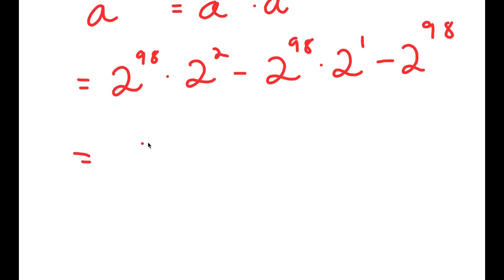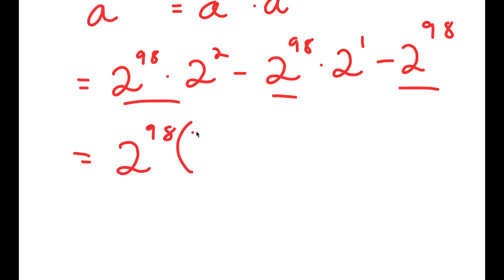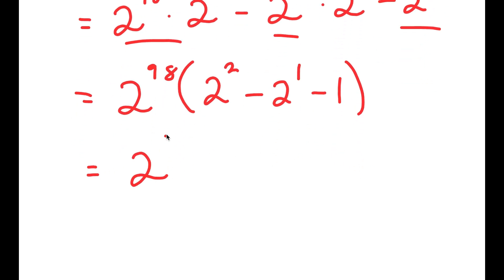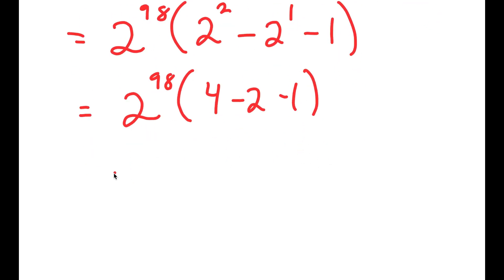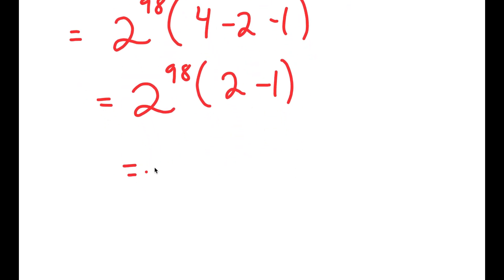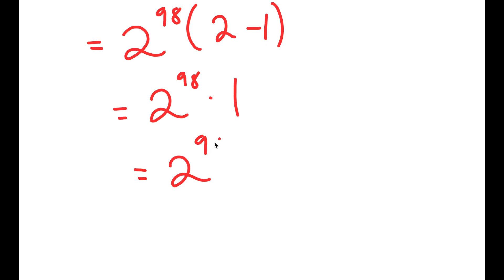From here I can factor out 2 to the power of 98, because it's in all of my terms. So if I factor out 2 to the power of 98, I get 2 to the power of 98 times the quantity 2 squared minus 2 to the power of 1 minus 1. This equals 2 to the power of 98 times (4 minus 2 minus 1), which equals 2 to the power of 98 times 1, which is just 2 to the power of 98. So 2 to the power of 98 is my final answer.